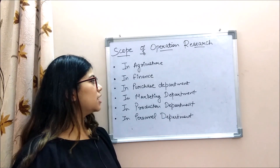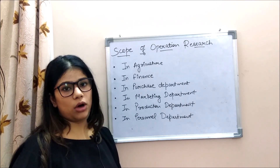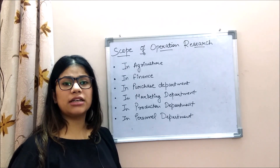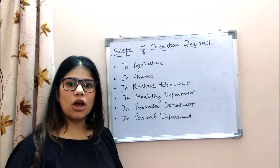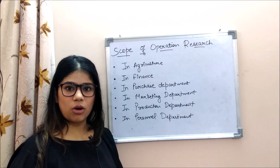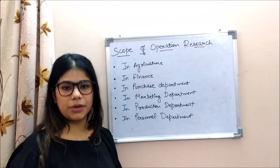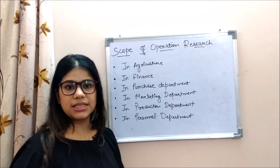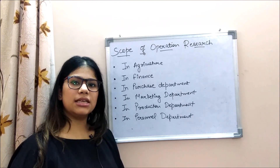The next scope is the purchase department. OR techniques help in the purchase department to determine at what price to buy and sell raw materials, how much raw materials are needed, and at what time to do equipment and machinery replacements — all governed by replacement policies.